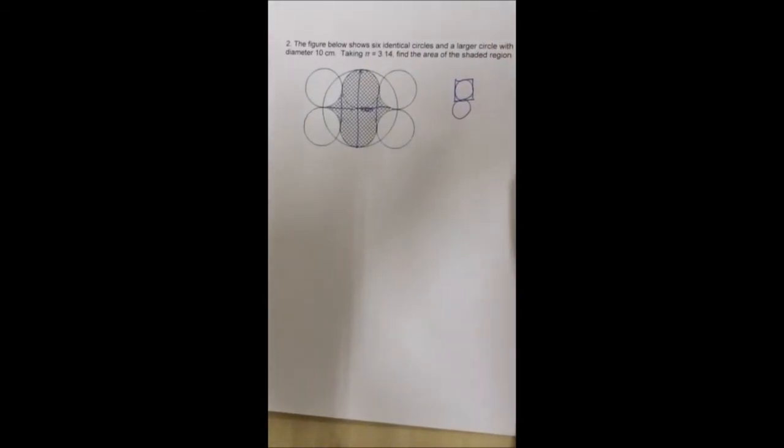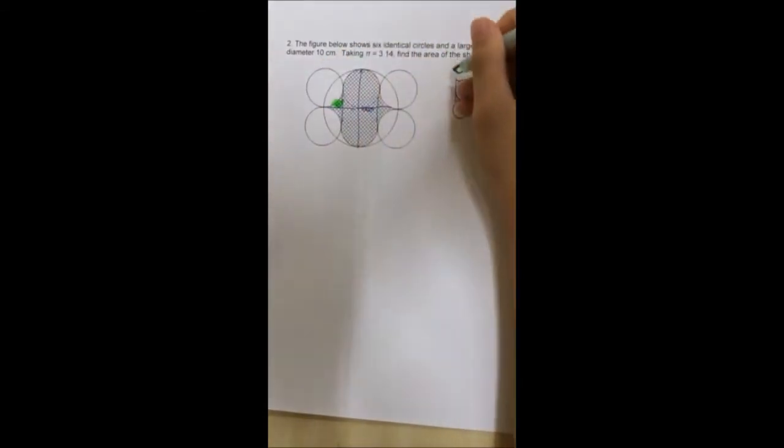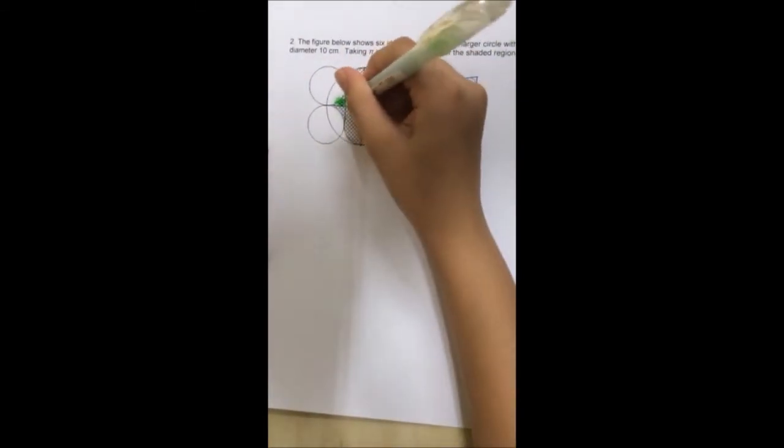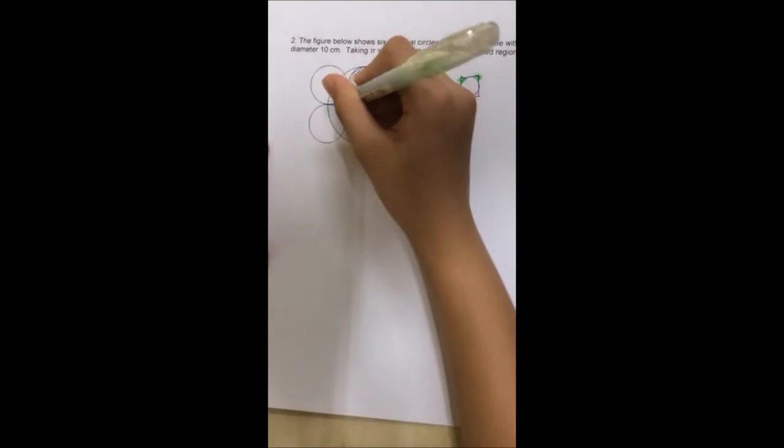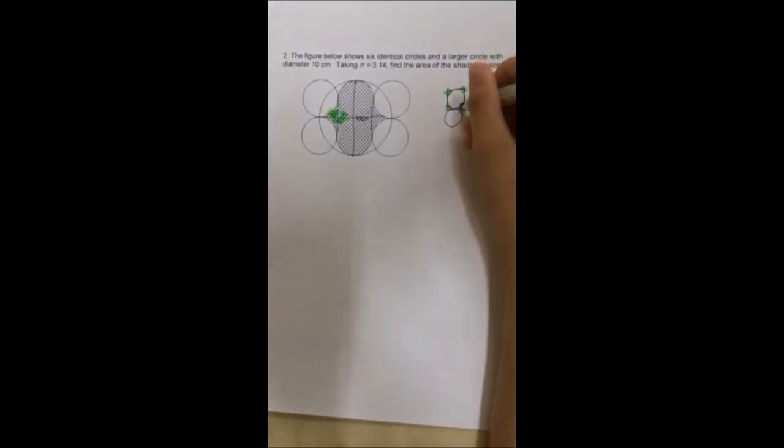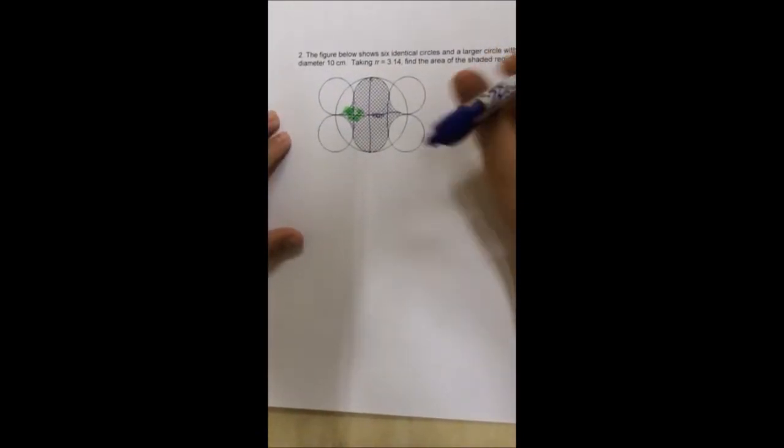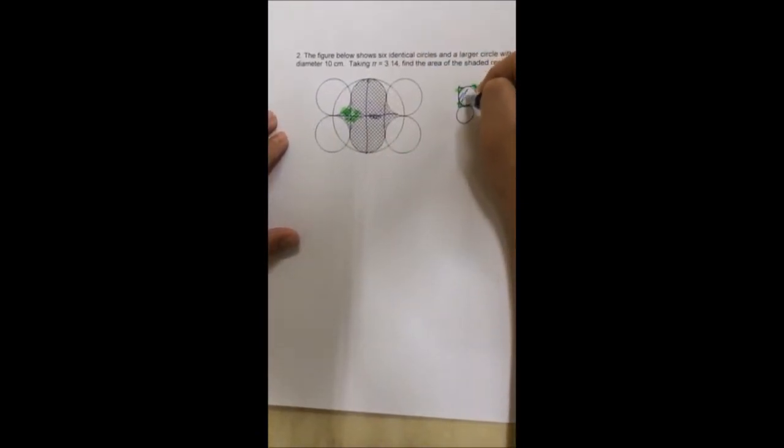So then, this here would be this and this would be this and this is this. And last but not least, this is also this. So the circle is also shaded so we should shade the circle too.